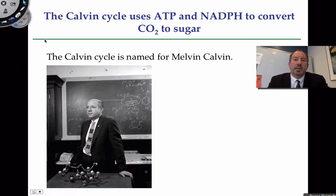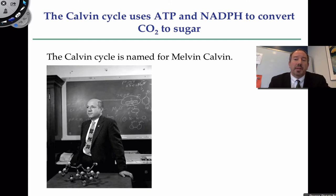The Calvin cycle is named after Melvin Calvin, a Nobel Prize winning scientist who won in 1961. He was working with his colleagues starting all the way back in the 1940s at the University of California, Berkeley, trying to determine the pathway that led to the production of sugar in photosynthesis.